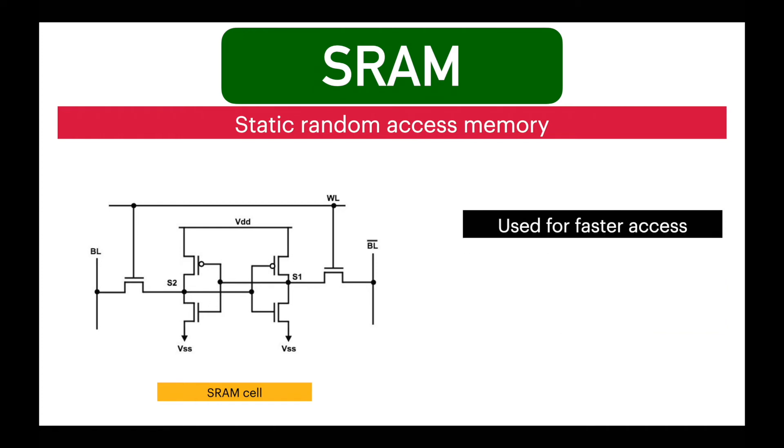SRAM is used where very fast access of data is needed. Like CPU register files, CPU cache, hard disk buffers, LCD and printers uses SRAM to hold the image to be displayed.